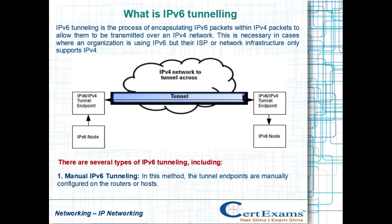IPv6 tunneling is the process of encapsulating IPv6 packets within IPv4 packets to allow them to be transmitted over an IPv4 network. This is necessary in cases where an organization is using IPv6 but their ISP or network infrastructure only supports IPv4.